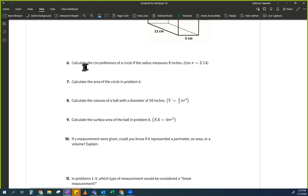Let's see. So it says calculate the circumference of a circle. And if the radius measures this, use pi equals to 3.14. So the very first thing that I want to remind you of is a bunch of formulas. So let's do formula review first.